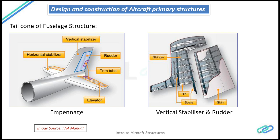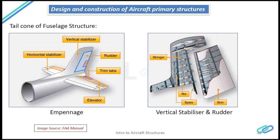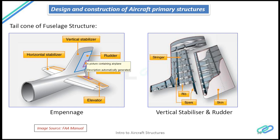The elevator is responsible for the pitching motion of the aircraft and the rudder for the yawing motion. Trim tabs, also called balance tabs, are used for motion correction. Imagine a situation where the aircraft is on the ground at the airport and the pilot wants to turn the aircraft to his left or right — he deploys the rudder.